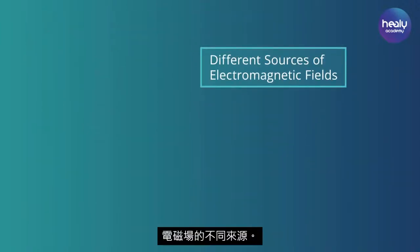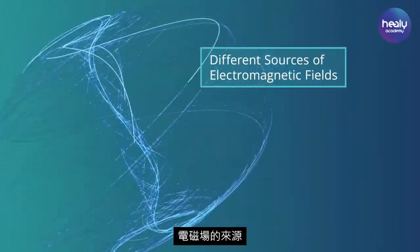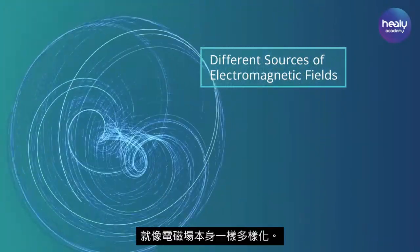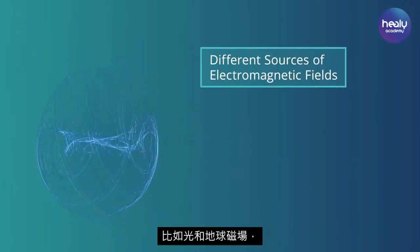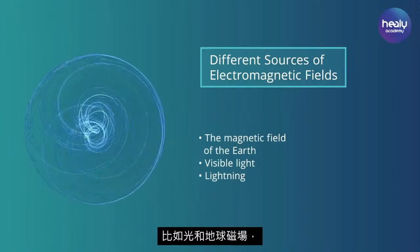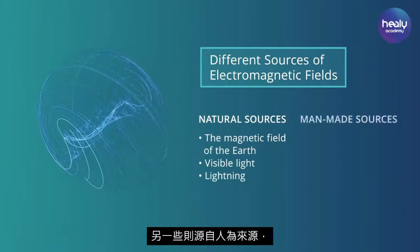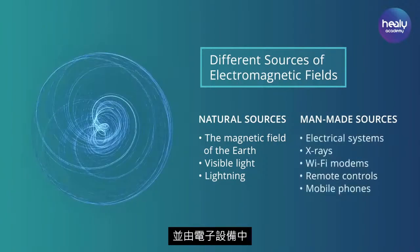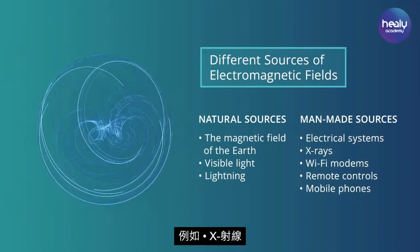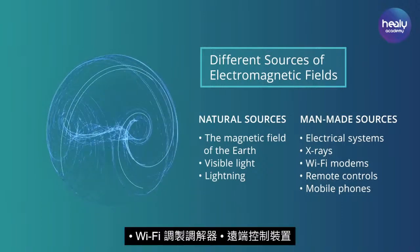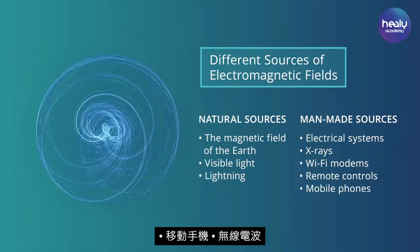Just as diverse as the electromagnetic fields themselves are their sources in our everyday lives. While some of them, like light and the magnetic field of the Earth, are of natural origin, others are man-made and caused by the deceleration or acceleration of charges in electronic devices, such as X-rays, Wi-Fi modems, remote controls, mobile phones, and radio waves.